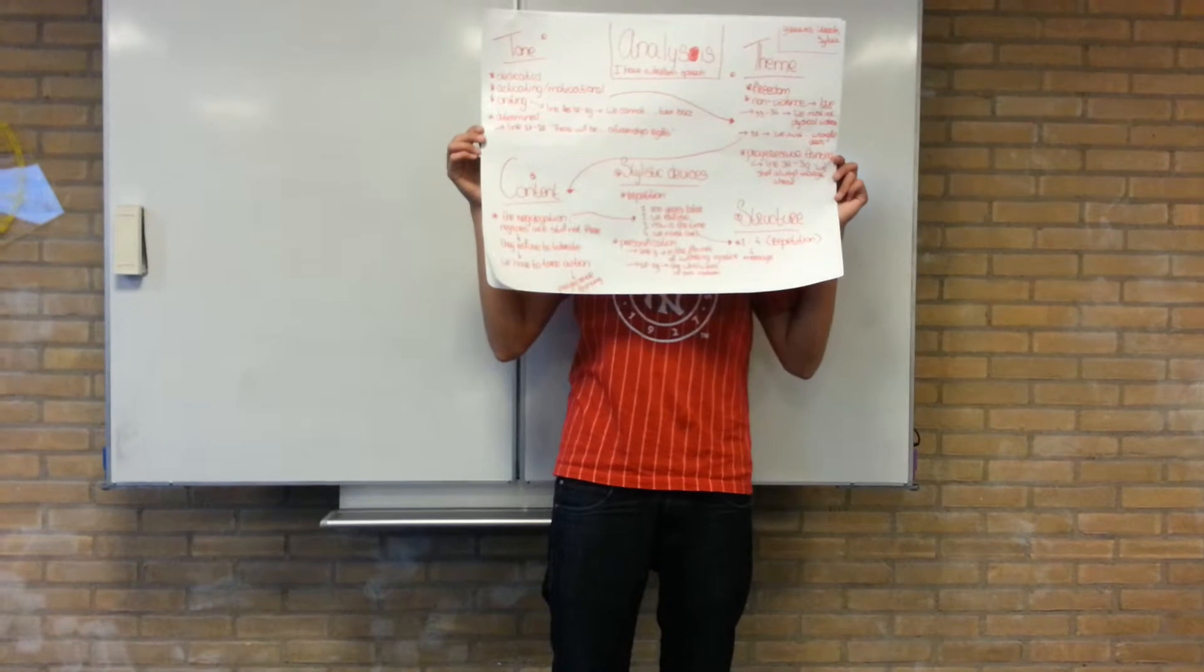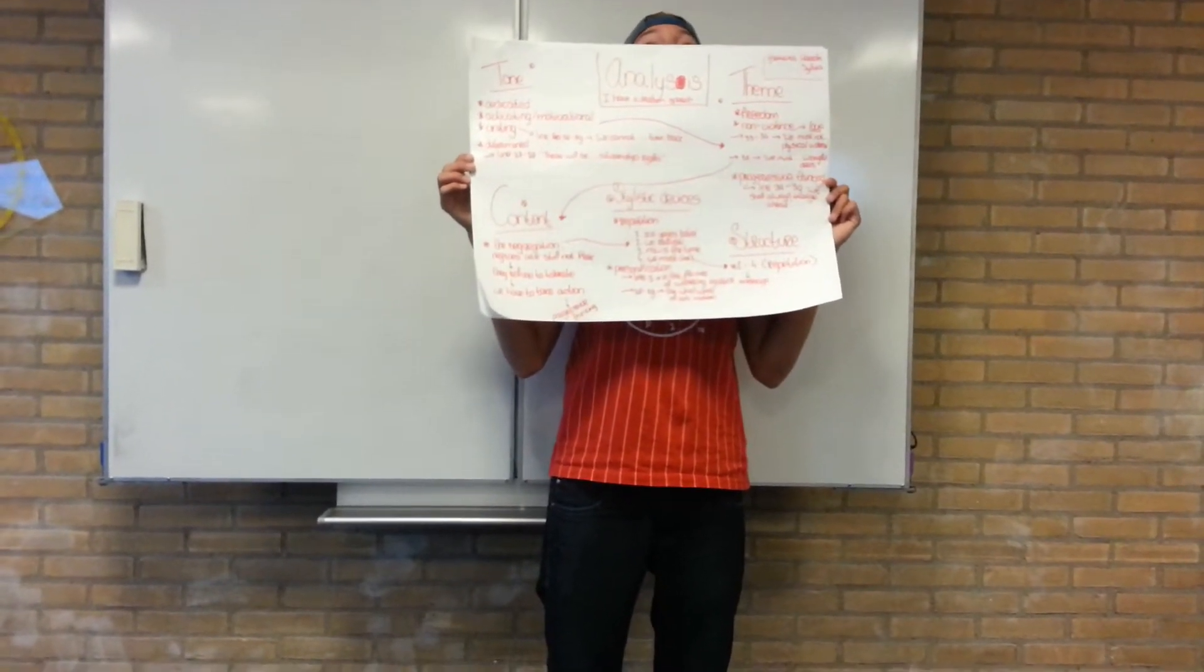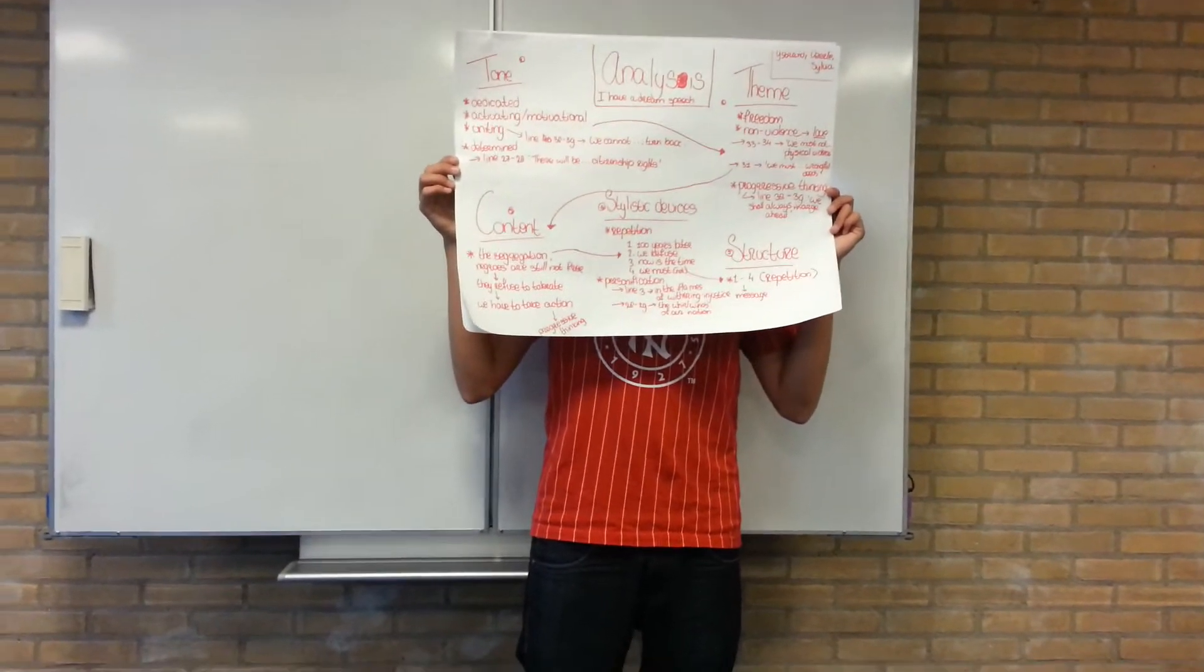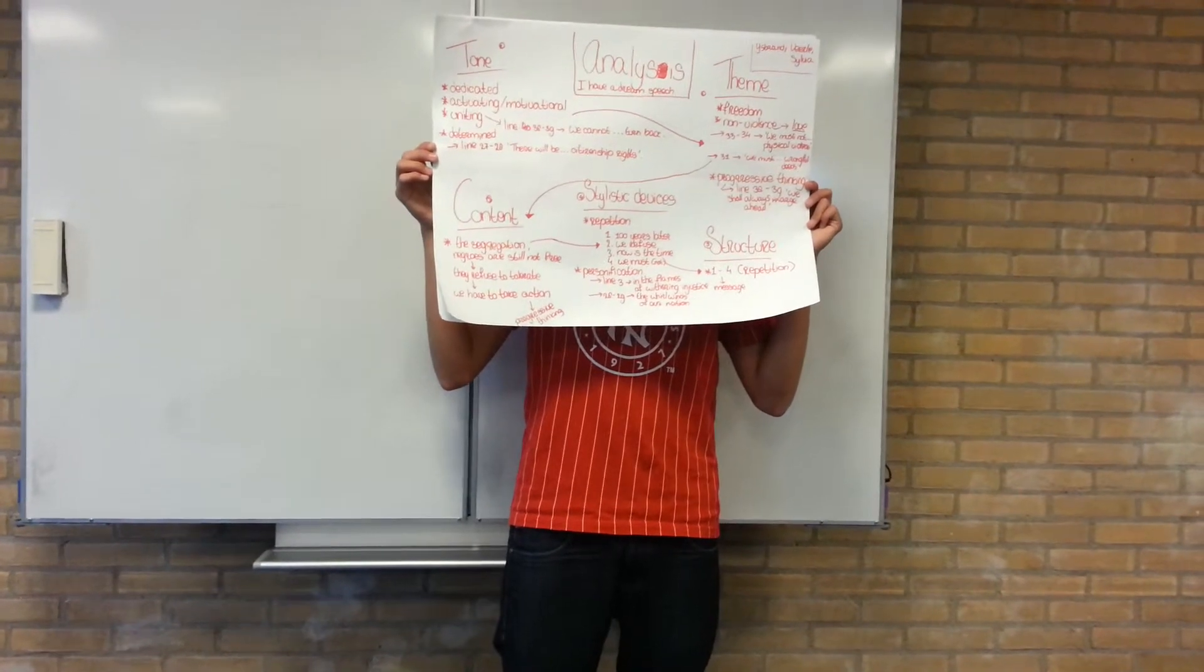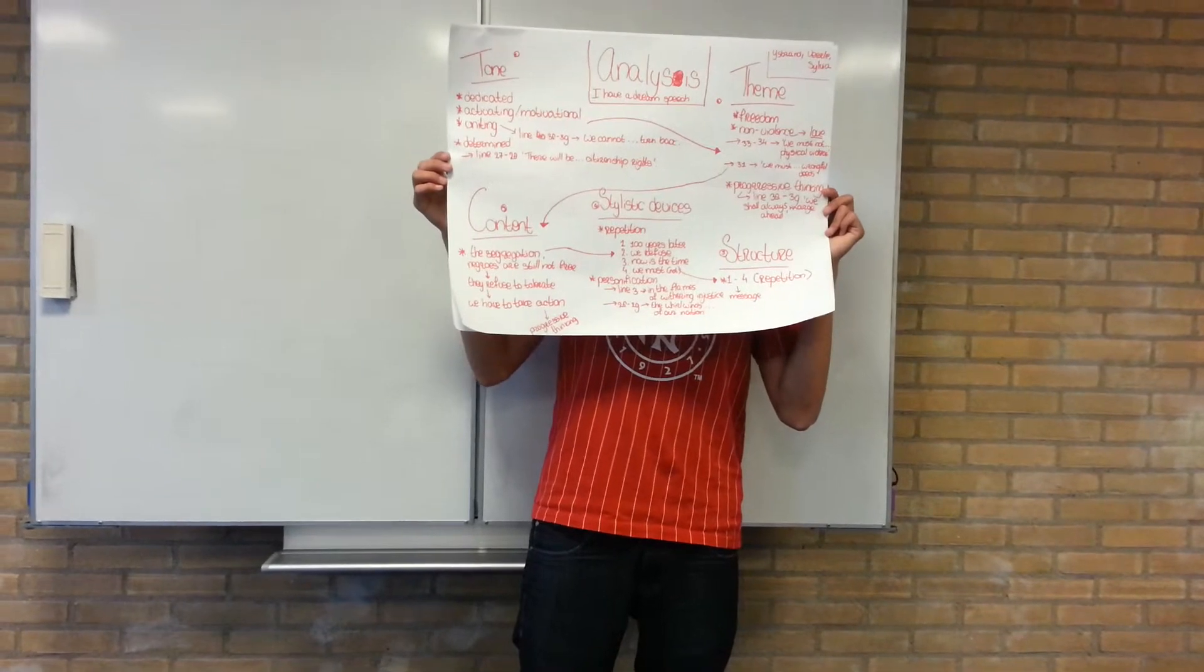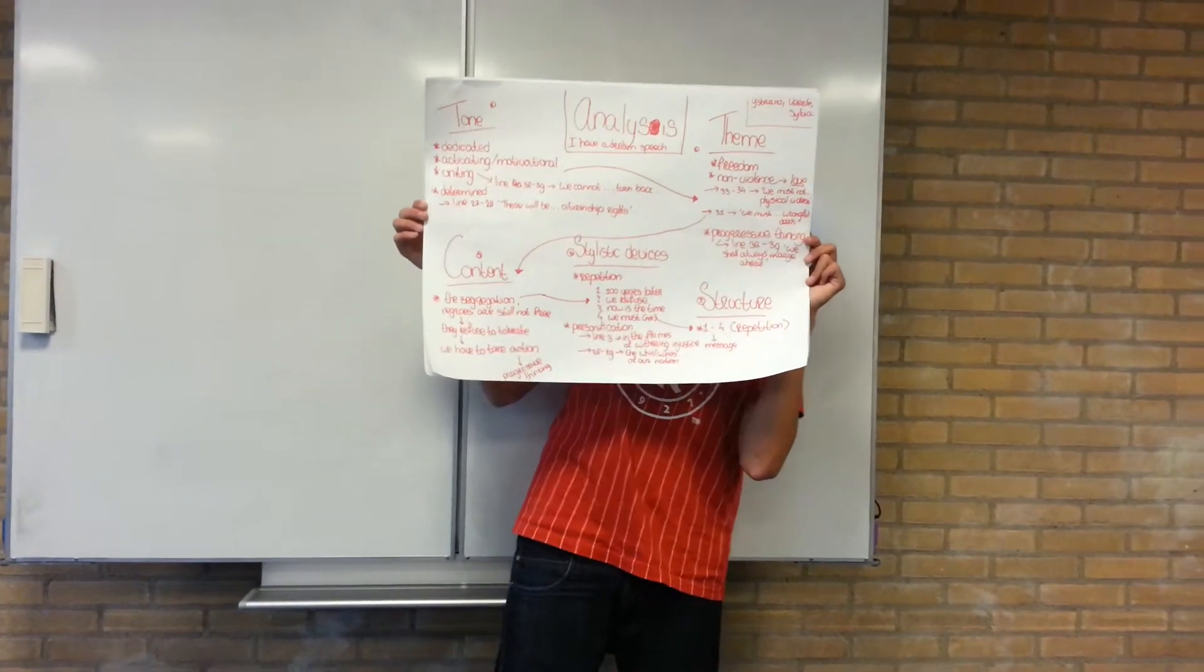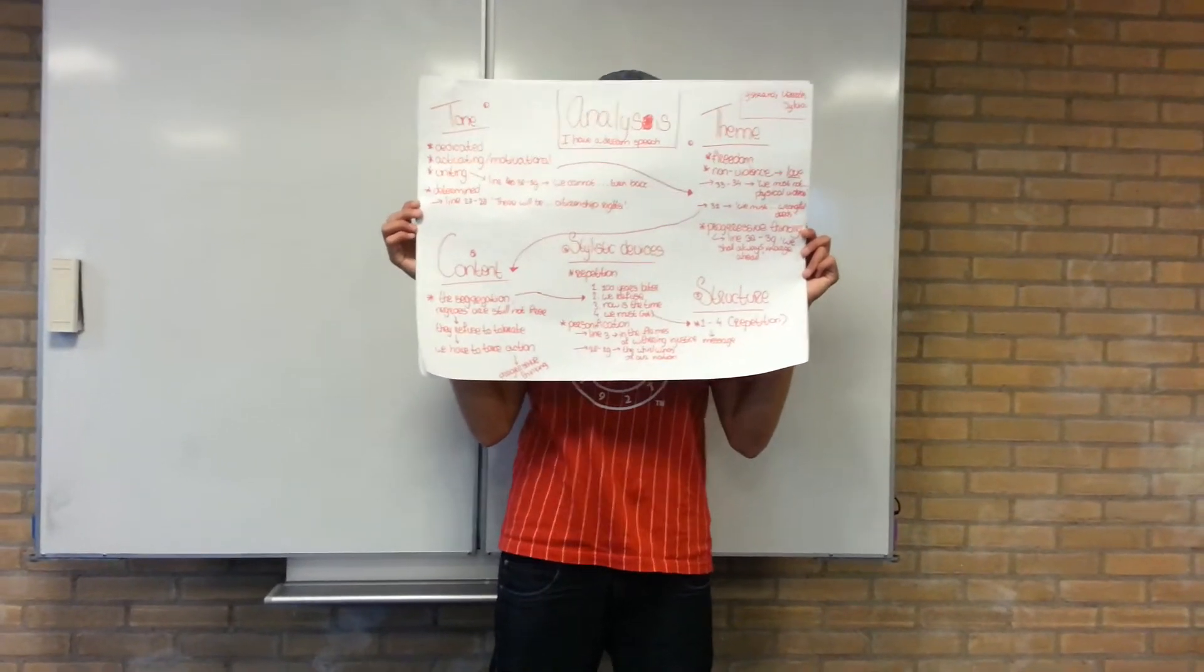You can see that in line 27 and 28. Those are: there will be neither rest nor tranquility in America until the Negroes grants his citizenship rights. So he says that they will not stop activating and be united and dedicated to the cause until the Negroes will have equal citizenship rights. You can put this back in, you can see this in the theme as well, because the theme is about freedom, which refers back to the citizenship rights.